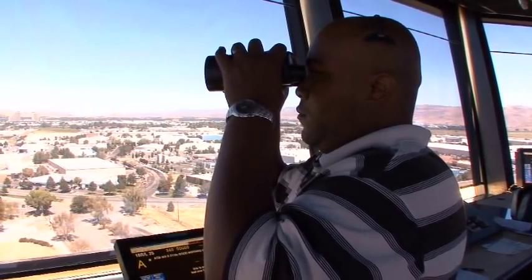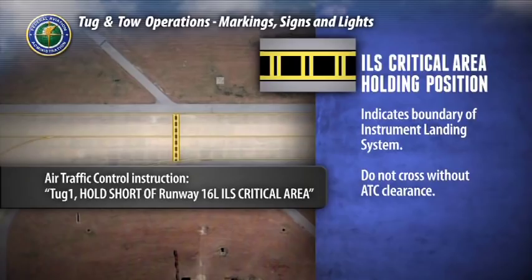For example: Tug 1, hold short of runway 16L, ILS critical area. You will hold at this position until air traffic control gives you instructions to proceed.